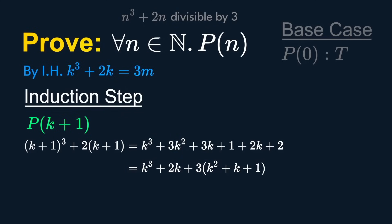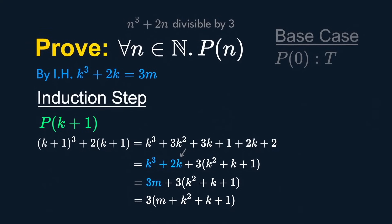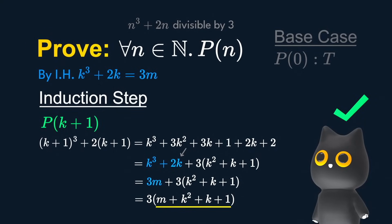Because we need to prove P(k+1), we substitute everything. Expand. And look what we have here: a k cubed plus 2k. Remember our induction hypothesis? We can replace this with 3M. Take out the common factor, and we can then conclude that it is indeed divisible by 3, since this part is an integer.